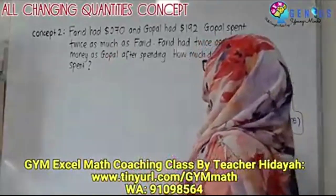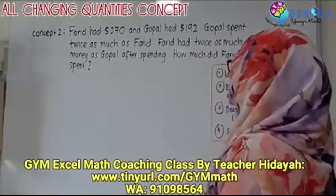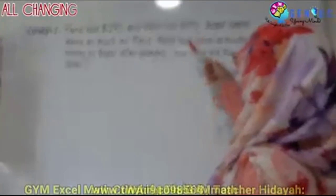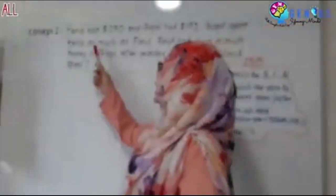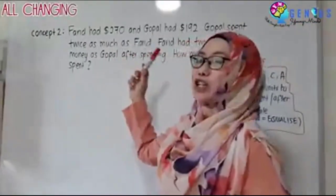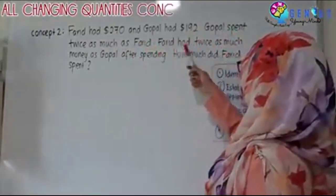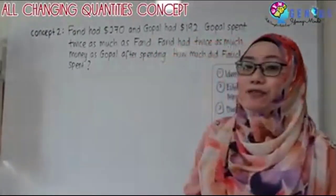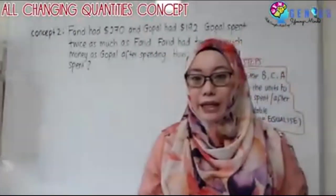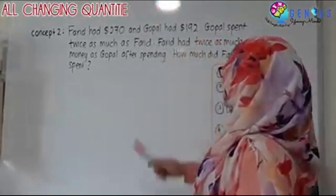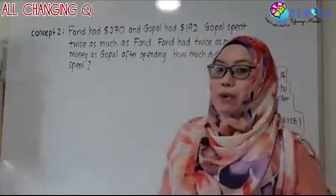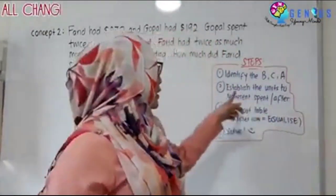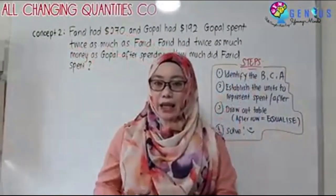Let's read first. Farid had $270 and Gopal had $192. Gopal spent twice as much as Farid. Farid had twice as much money as Gopal after spending. How much did Farid spend? The first step is to identify the BCA — Before, Change, and After.